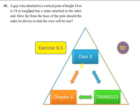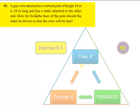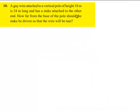Moving on to the 10th question. A guy wire attached to a vertical pole of height 18 meters is 24 meters long and has a stake attached to the other end. How far from the base of the pole should the stake be driven so that the wire will be taut?